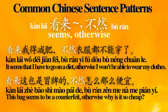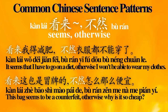看来...不然 is equivalent to 'seems, otherwise' in English. Sentence examples: 看来我得减肥，不然衣服都不能穿了。 It seems that I have to go on a diet. Otherwise, I won't be able to wear my clothes.